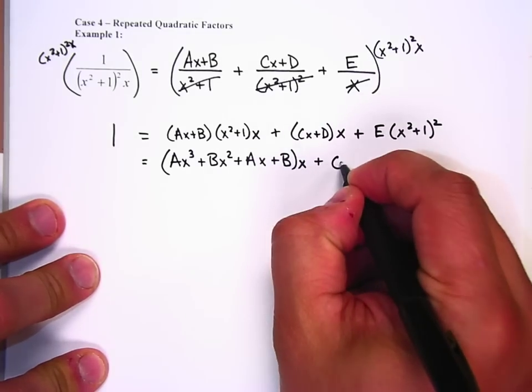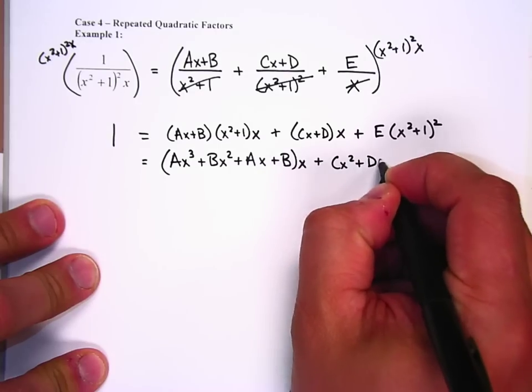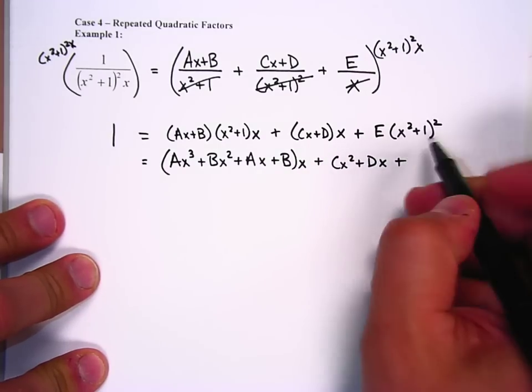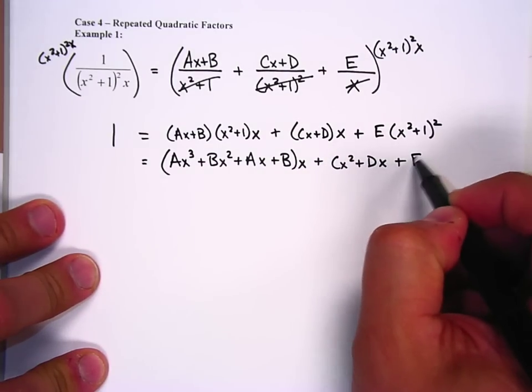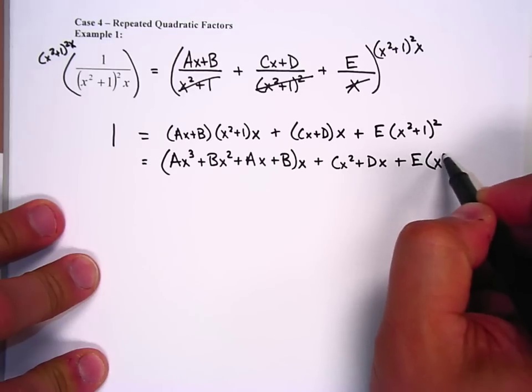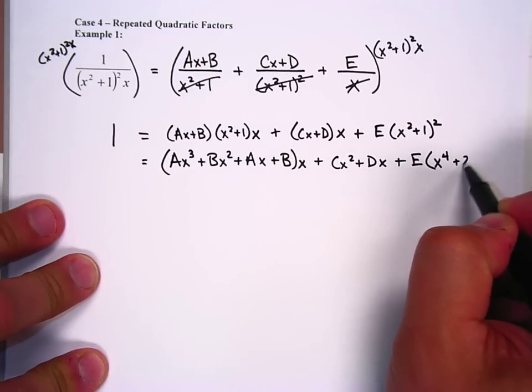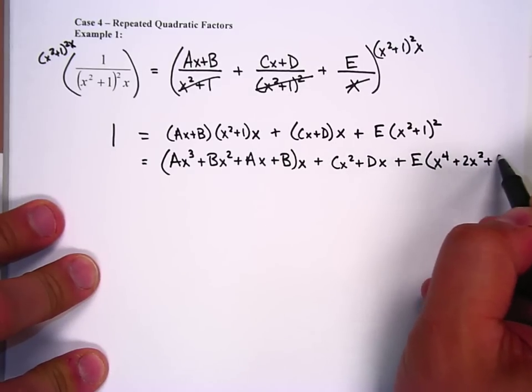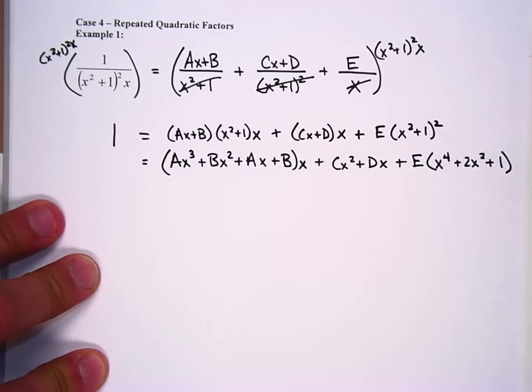Then we've got cx squared plus dx plus, remember this is going to be written twice, so it's going to be E. It's x to the fourth plus 2x squared plus 1. Sweet.